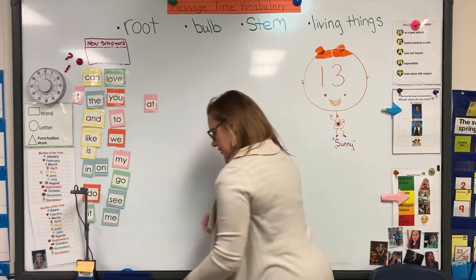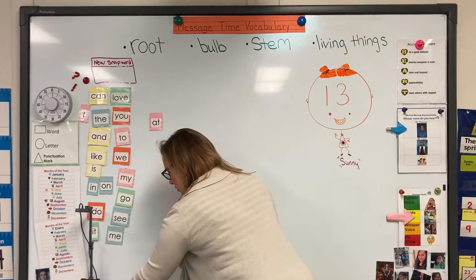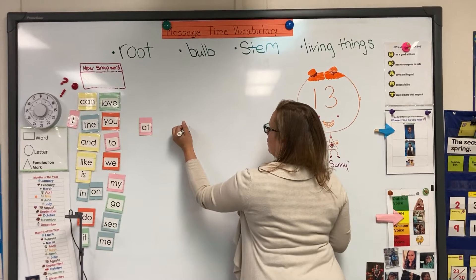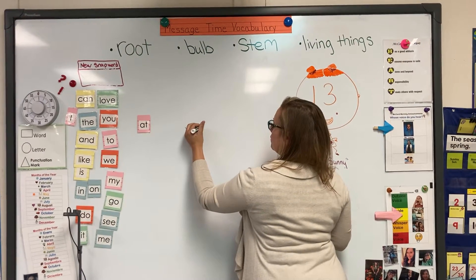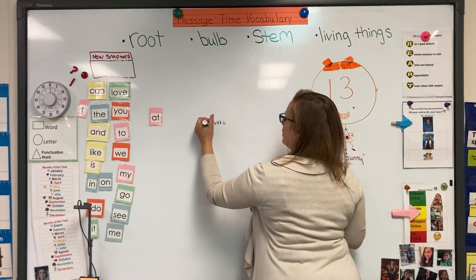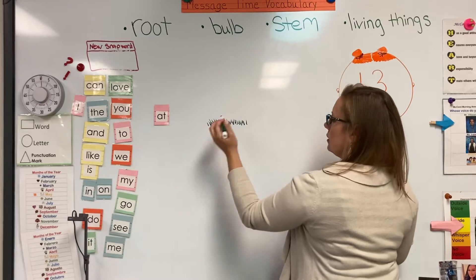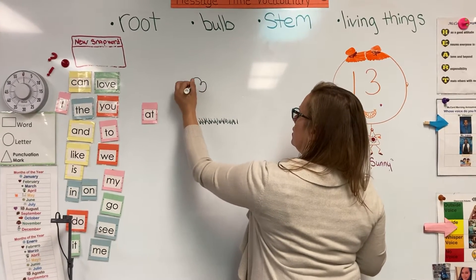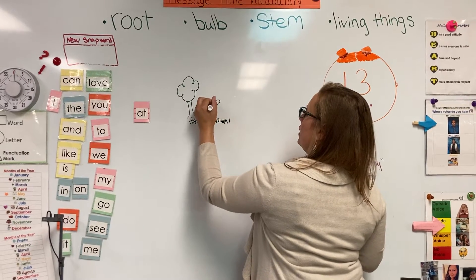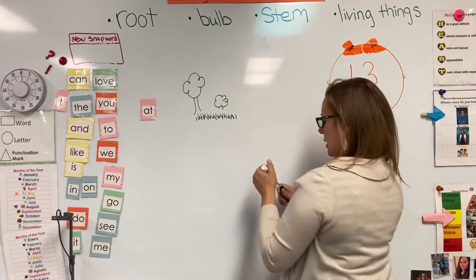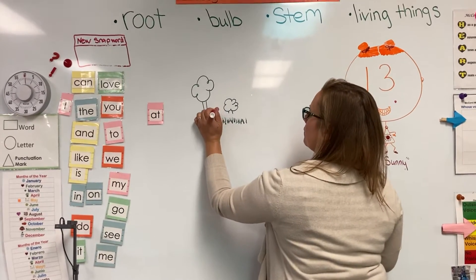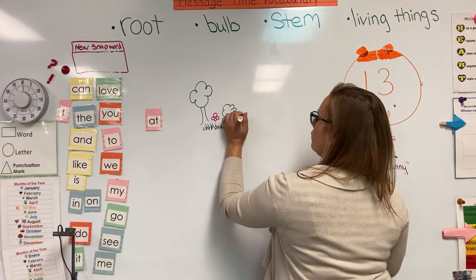Today's message is about going to the park. When you go to the park, what do you see a lot of? There is a lot of grass at the park. There are also a lot of trees at the park and bushes. And there are some plants at the park as well, some flowers.